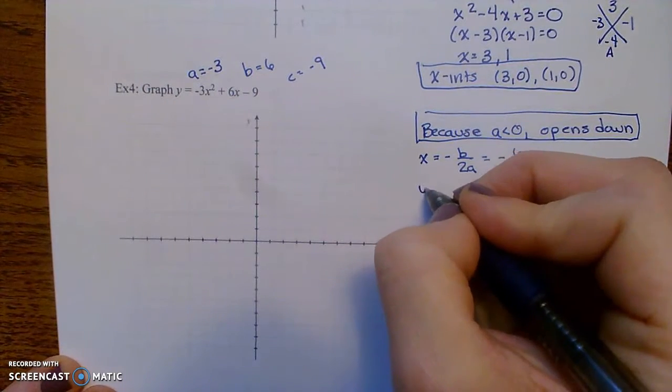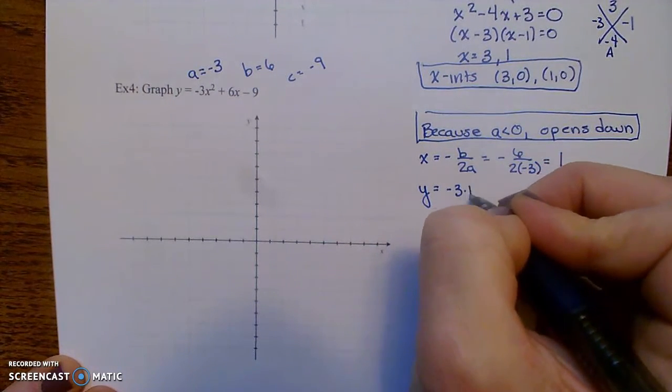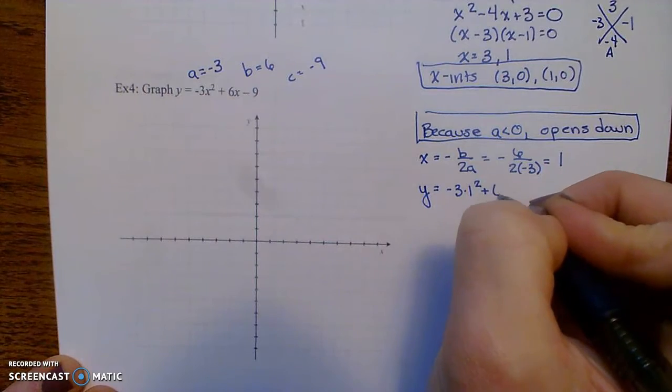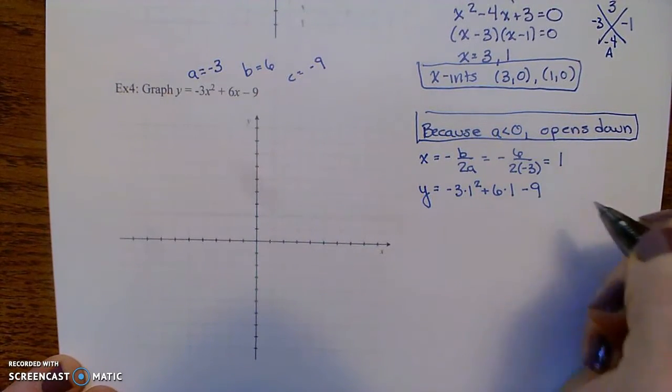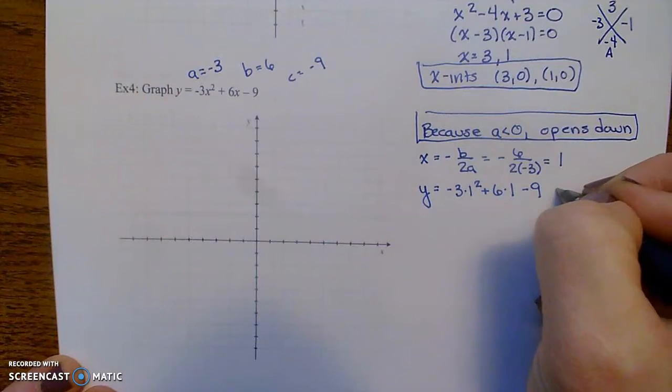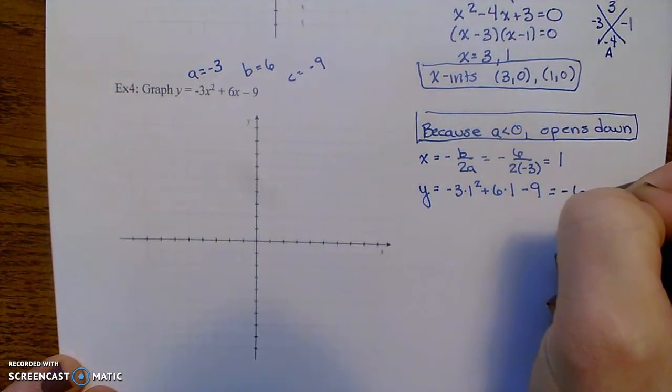And then we can plug that in. So negative 3 times 1 squared plus 6 times 1 minus 9. So that'll be a negative 6.